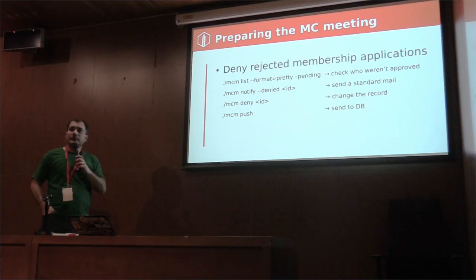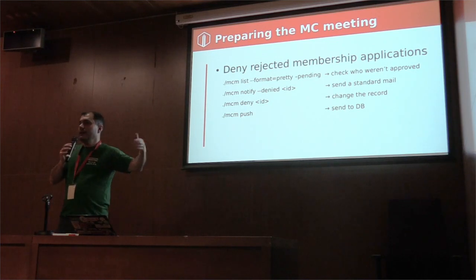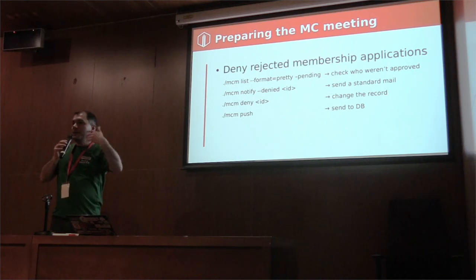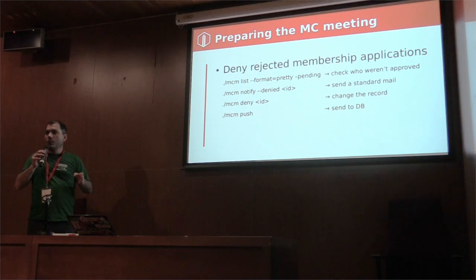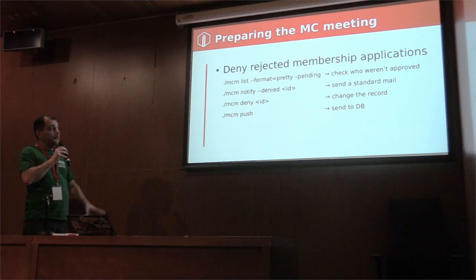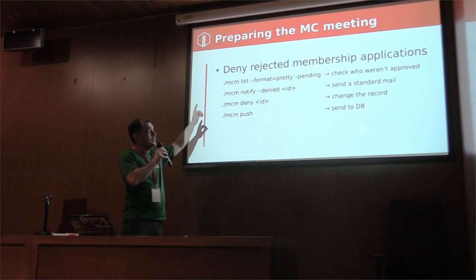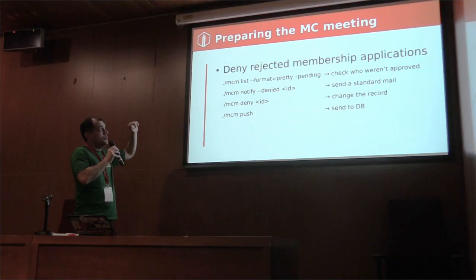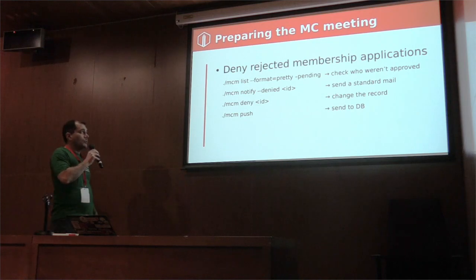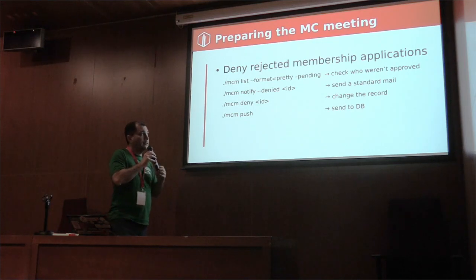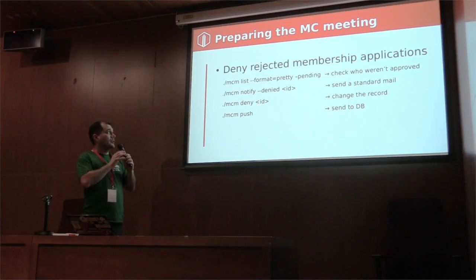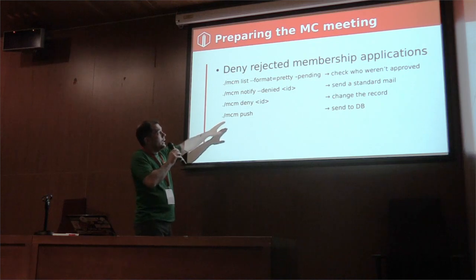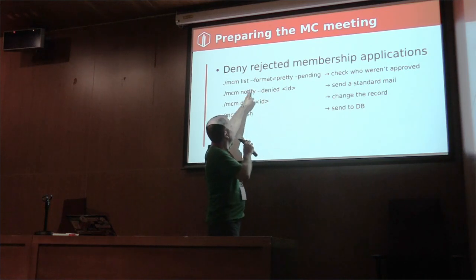Gerrit works as an archive for past decisions of the Membership Committee. After handling many new applications and renewals, we reach the end of the quarter. The member on duty should prepare the meeting. First, denied applications are processed — when a candidate doesn't meet the requirements of the statutes, we first check with the common list.